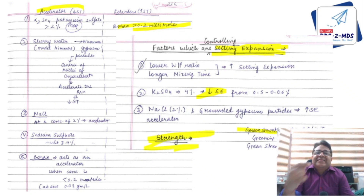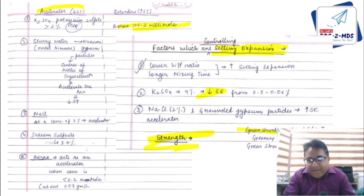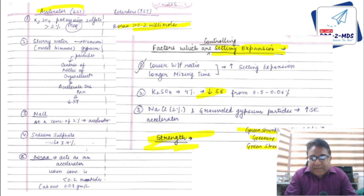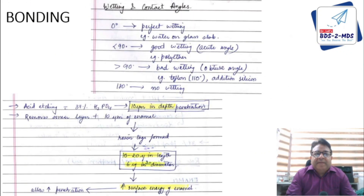Regarding strength in gypsum: green shrinkage is related to ethyl silicate bonded investment material. Greening is related to alloys containing silver. Green strength is related to gypsum — also called wet strength.